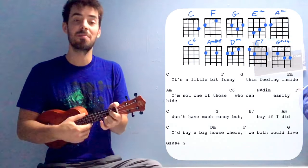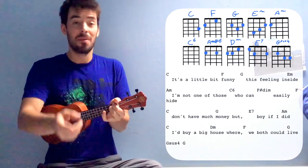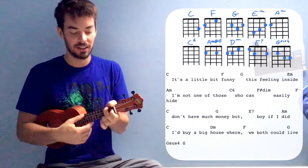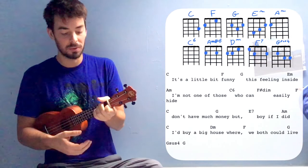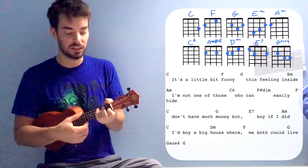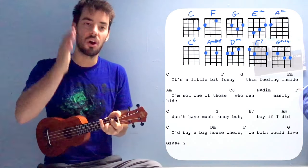C, don't have much G on money. Money, but E7. Boy, if I did, A minor on the did. C. I'd buy a big D minor house where we both could live. So you see, for example, here the F is before the we both.